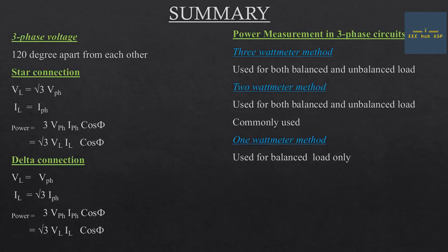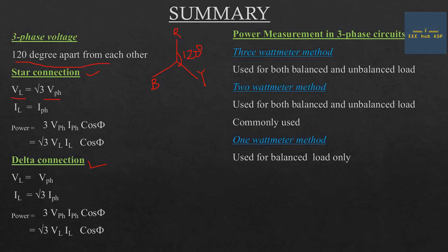Here is the summary for three-phase voltage and poly-phase circuits. In a three-phase system, voltages are 120 degrees apart from each other. For a star connection: line voltage equals root 3 into phase voltage, line current equals phase current, and power P equals 3 into V-phase into I-phase into cos φ, which also equals root 3 × V_L × I_L × cos φ.